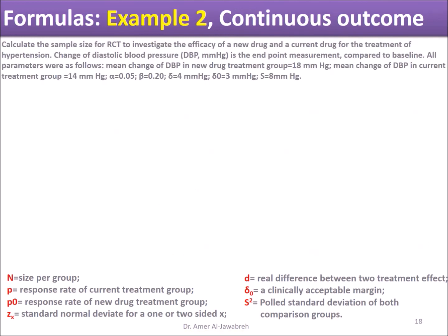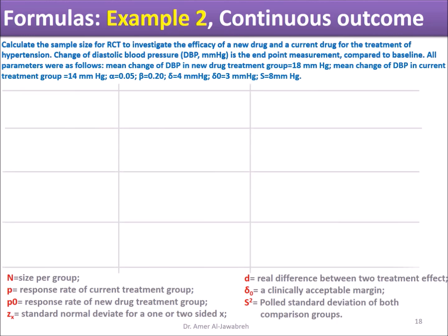Example 2 — continuous outcome: Calculate the sample size for an RCT to investigate the efficacy of a new drug versus current drug for the treatment of hypertension. Change in diastolic blood pressure (DBP) is the endpoint measurement. Assuming mean change of DBP in new drug = 18 mmHg, mean change DBP in current drug = 14 mmHg, alpha = 0.05, beta = 0.2, delta = 0.4 mmHg, delta = 0.3 mmHg, and S = 8 mmHg.